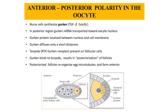Nurse cells basically synthesize Gurken protein. Gurken belongs to the TGF-beta family and is synthesized by the nurse cells. In the posterior region, Gurken mRNA is transported toward the oocyte nucleus. This Gurken protein is transported from the posterior region towards the oocyte nucleus.